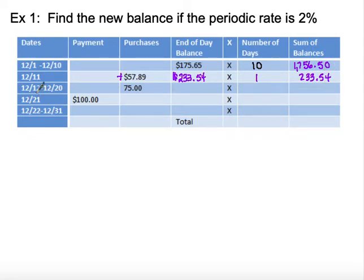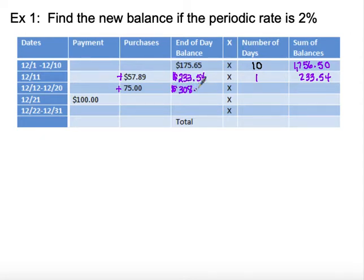On December 12th we made another purchase of $75.00. We add that to the end-of-day balance — not in the purchase column — because this is where our true balance is going to be. Adding $75.00 gives us $308.54.